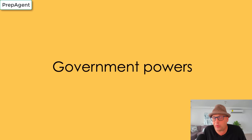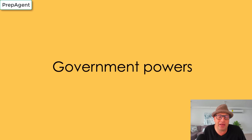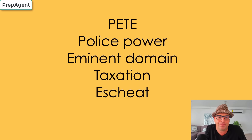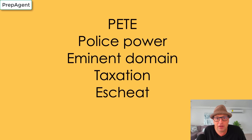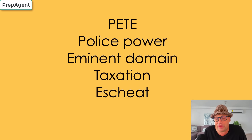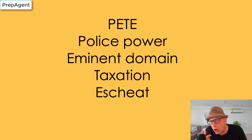The next concept is government powers. There are four government powers you need to know to pass the real estate exam, and we remember the acronym PETE: police power, eminent domain, taxation, and escheat. Police power is a government power where they don't take the property away from you, but they tell you how to use it. Examples include building codes, rent control, and zoning.